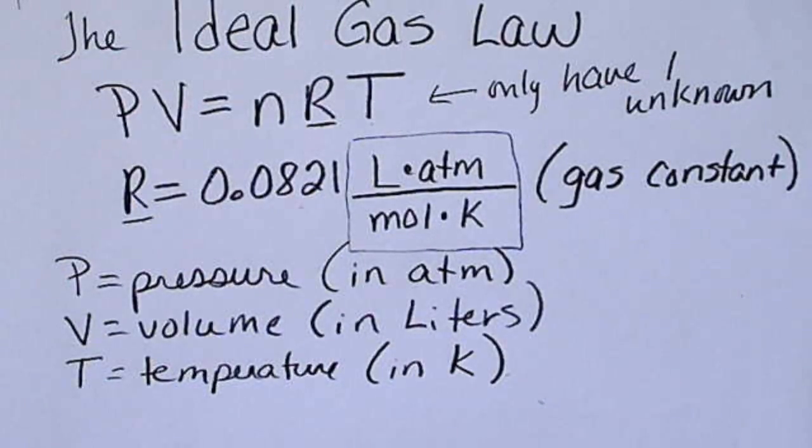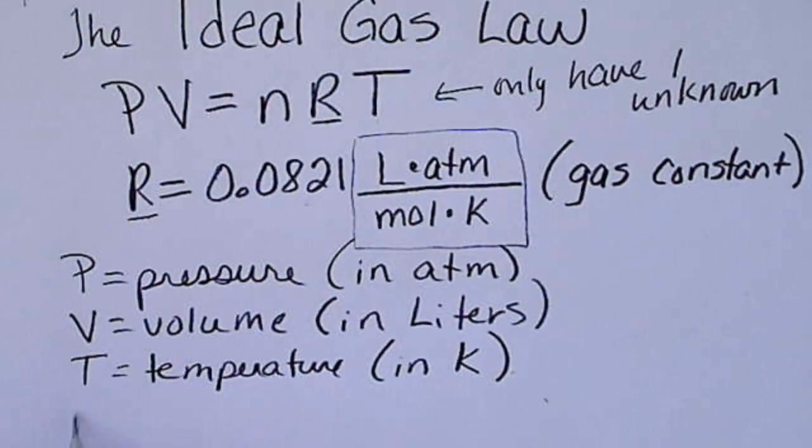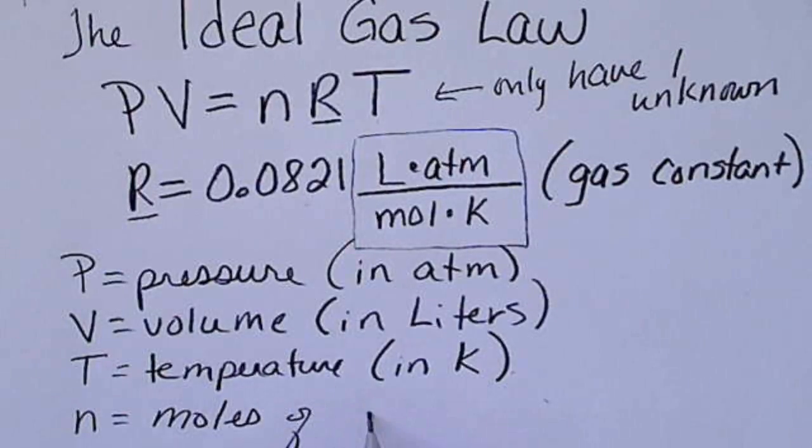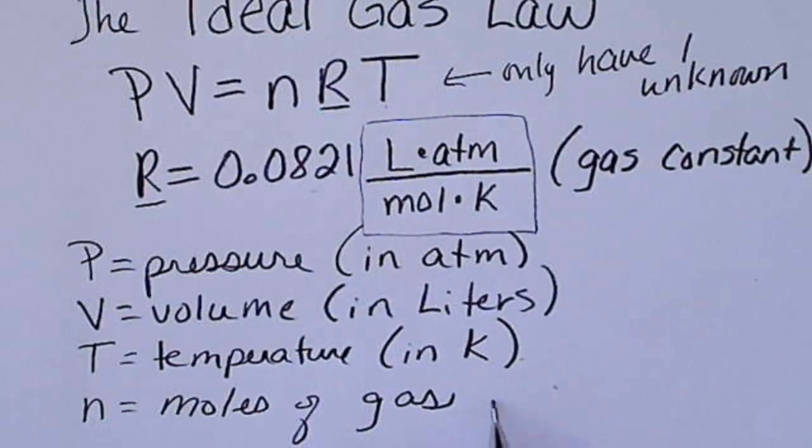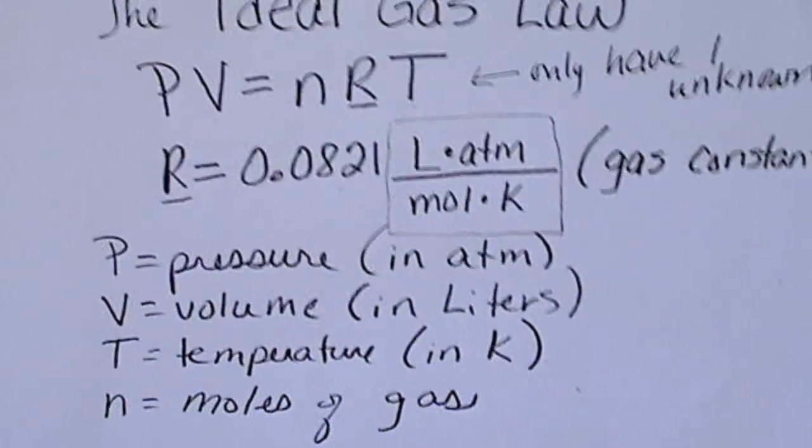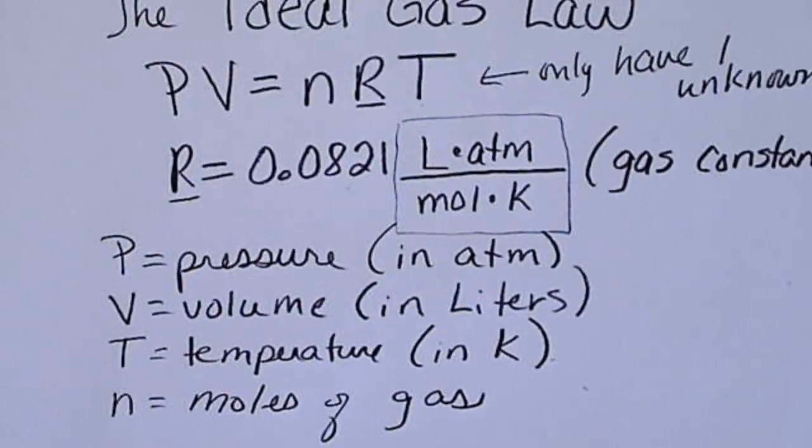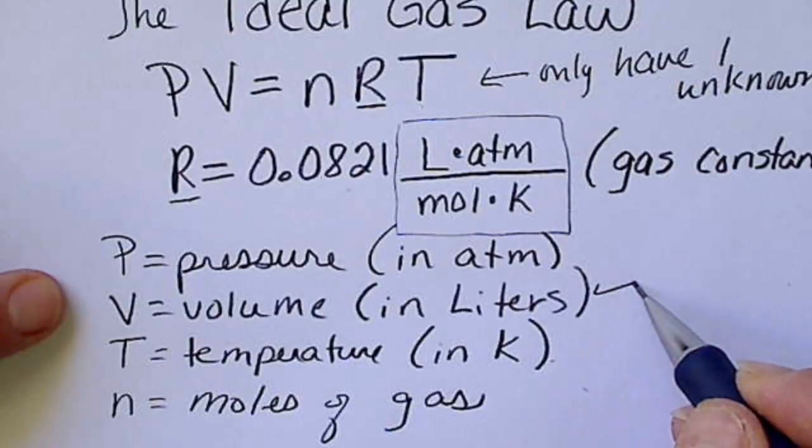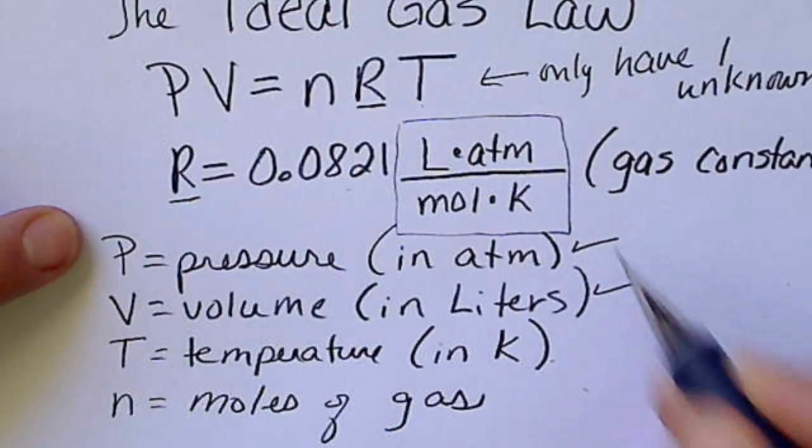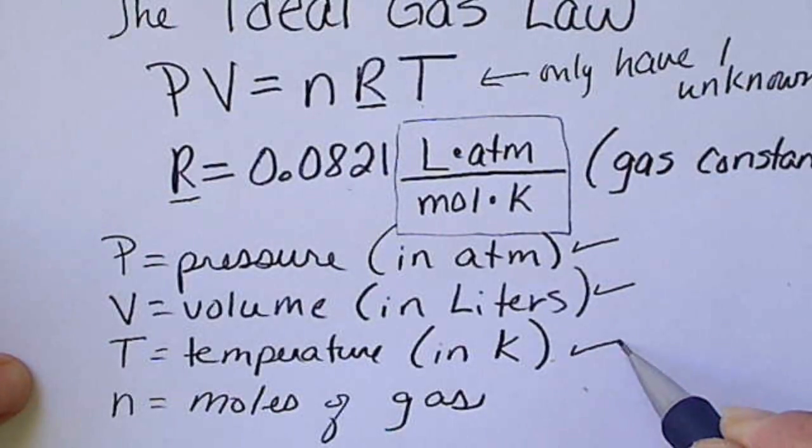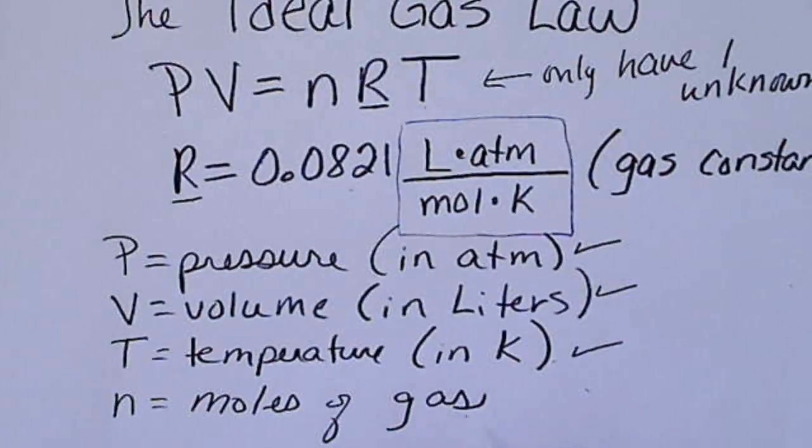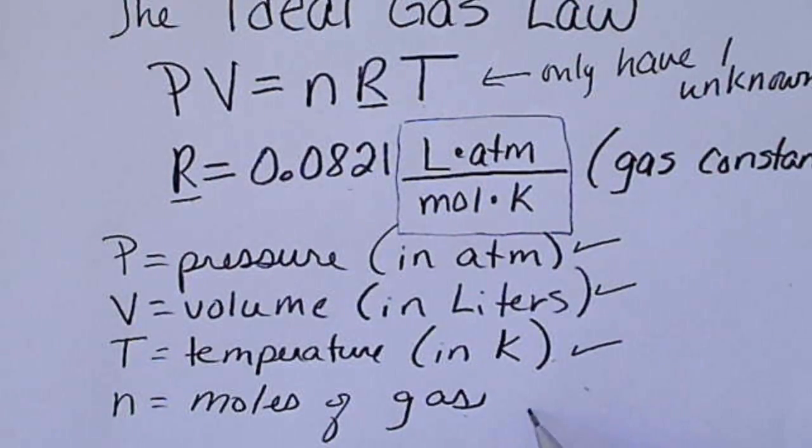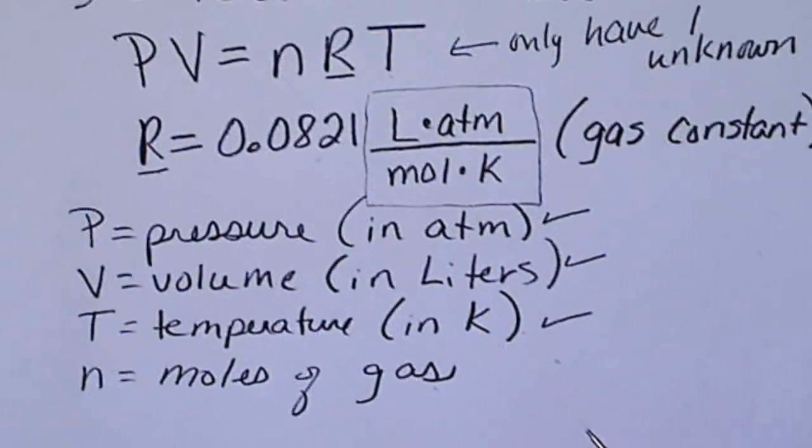And then this is the new way that we solve for moles. So n is always equal to moles of a gas. For example, if we want to solve for moles of a gas, if we had a balloon and we knew its volume and we knew the pressure and we knew the temperature, then we could solve for n. And we do that by rearranging the equation.